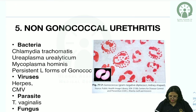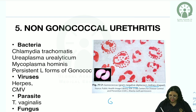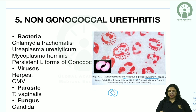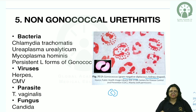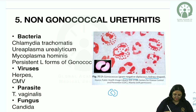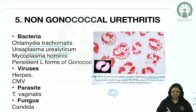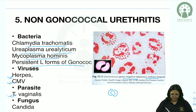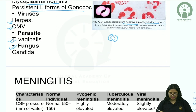Gonococcal urethritis shows gram-negative diplococci (kidney-shaped, intracellular, inside neutrophils) on smear. Non-gonococcal urethritis is caused by: Chlamydia trachomatis (most common cause), Ureaplasma urealyticum, Mycoplasma hominis, persistent forms of gonococci, viruses (Herpes, CMV), parasites (Trichomonas vaginalis, Gardnerella vaginalis), and fungi (Candida).